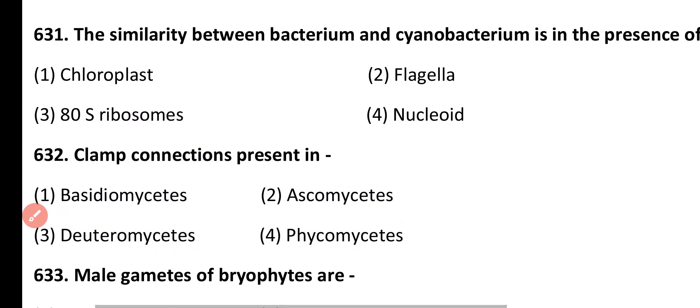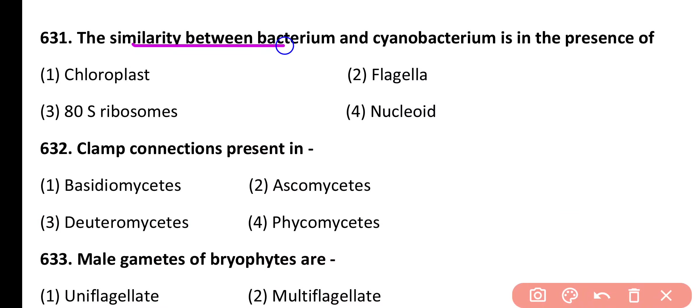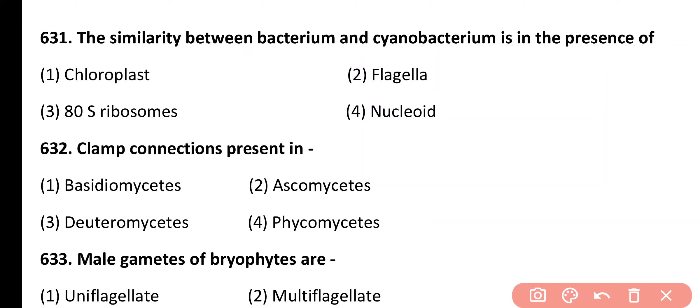Question 631. The similarity between bacterium and cyanobacterium is the presence of: chloroplast, flagella, 70S ribosomes, nucleoid. Correct answer is option 4. Bacteria as well as cyanobacteria have a nucleoid instead of a true nucleus; true nucleus is absent in them.